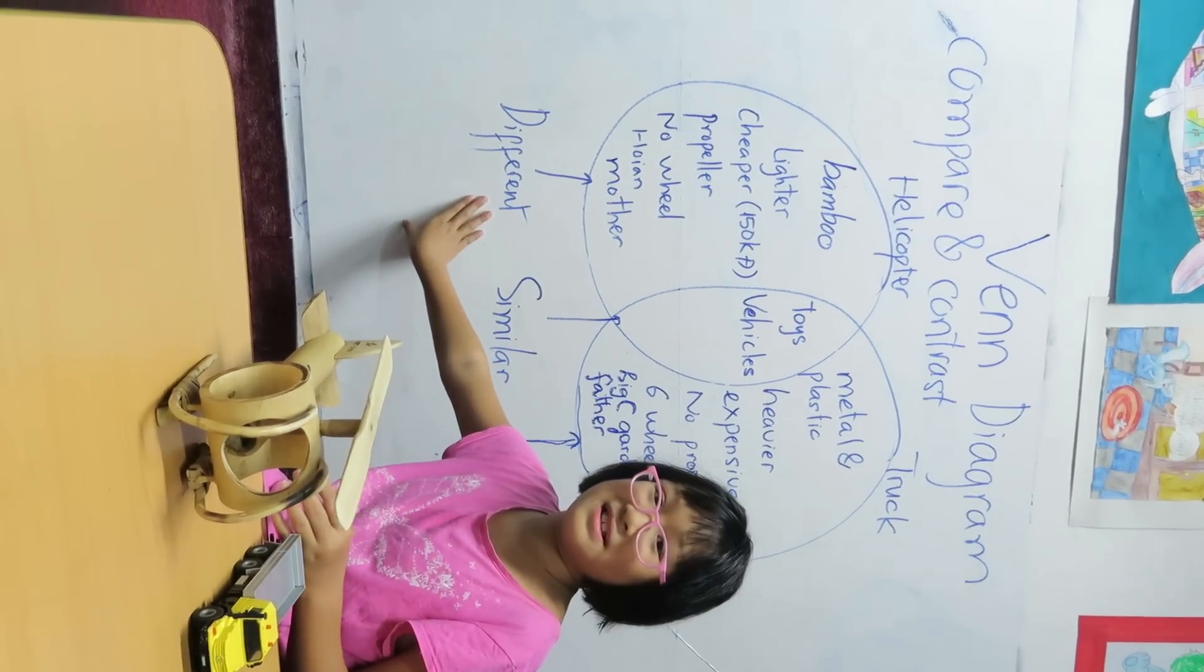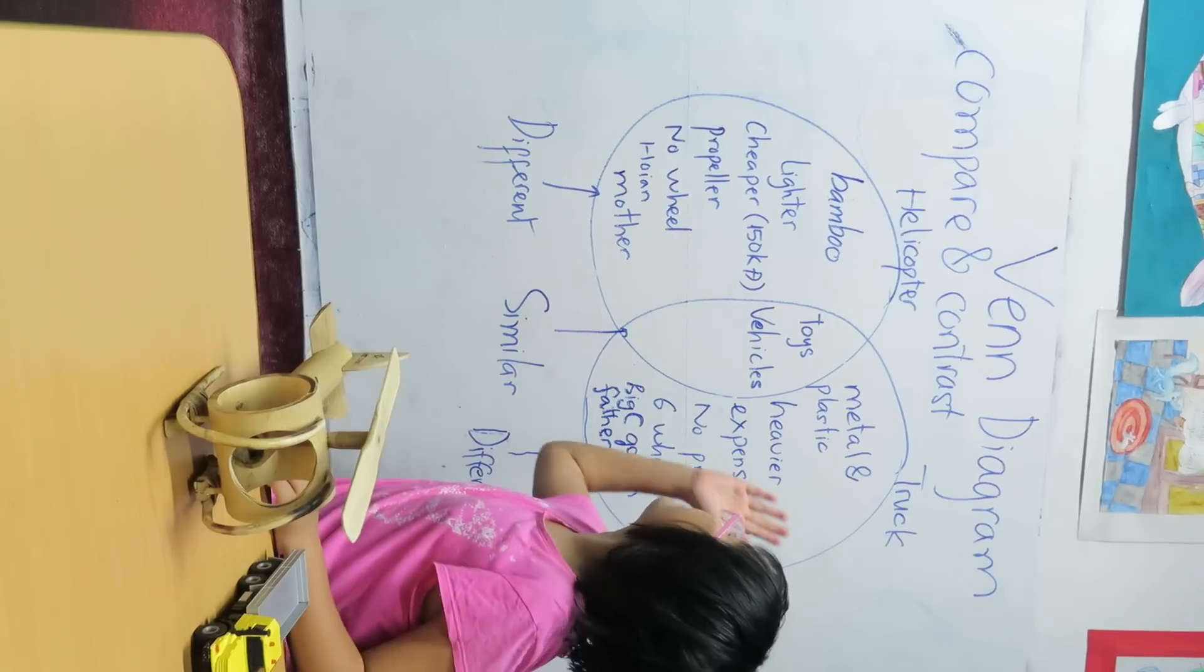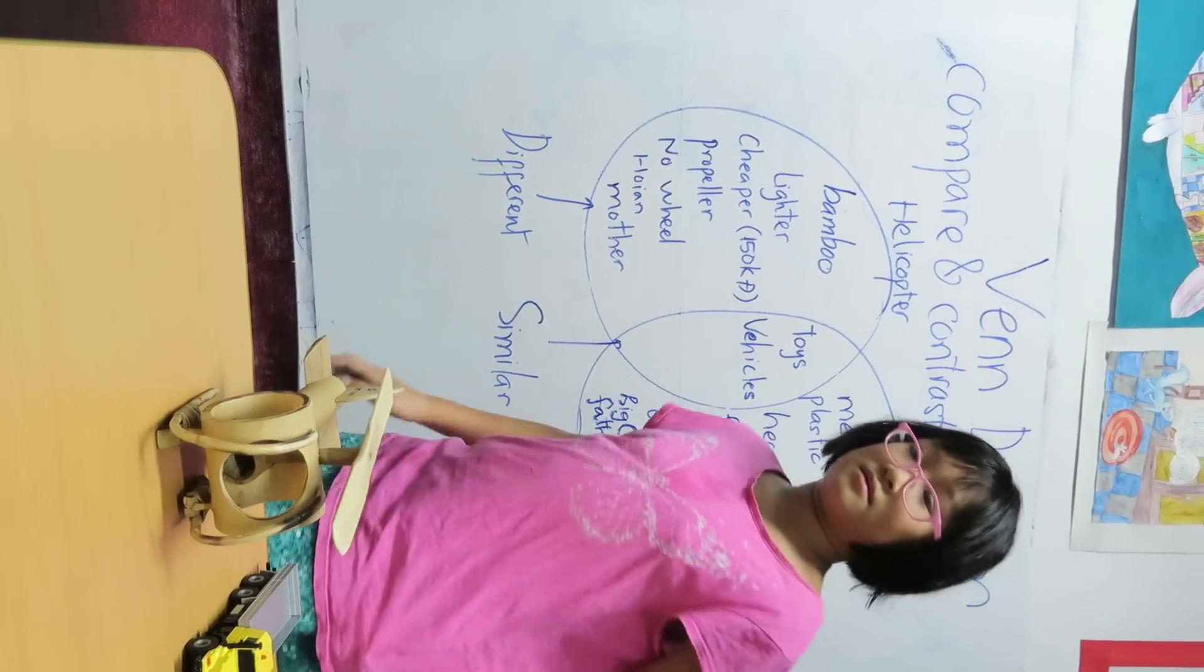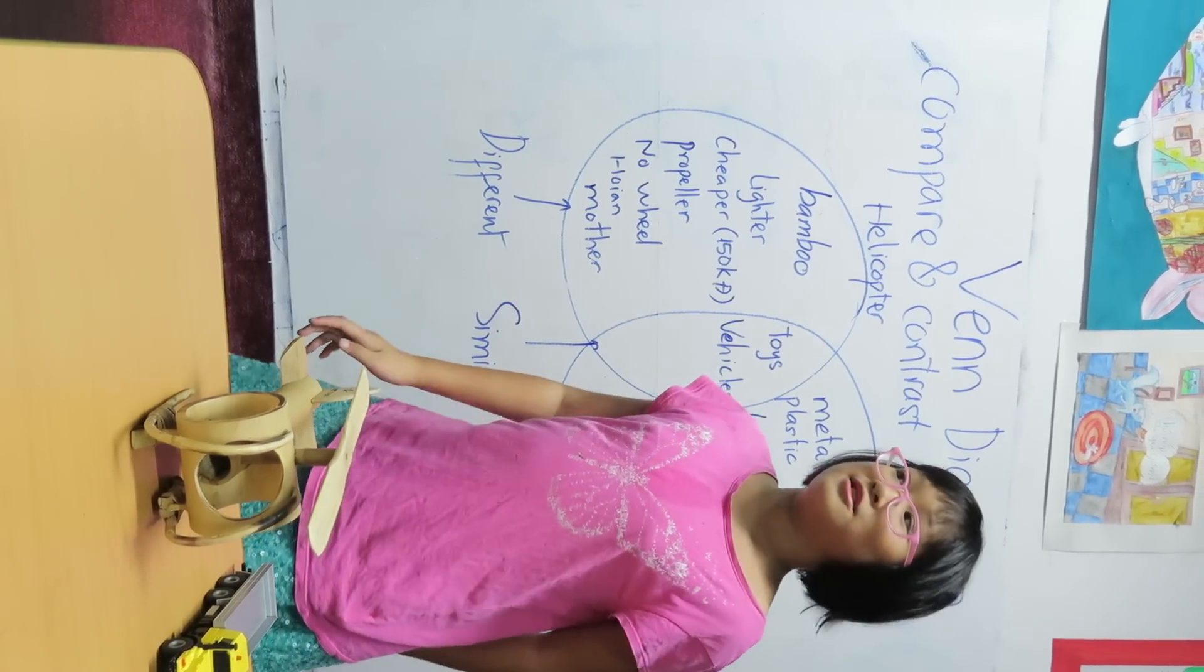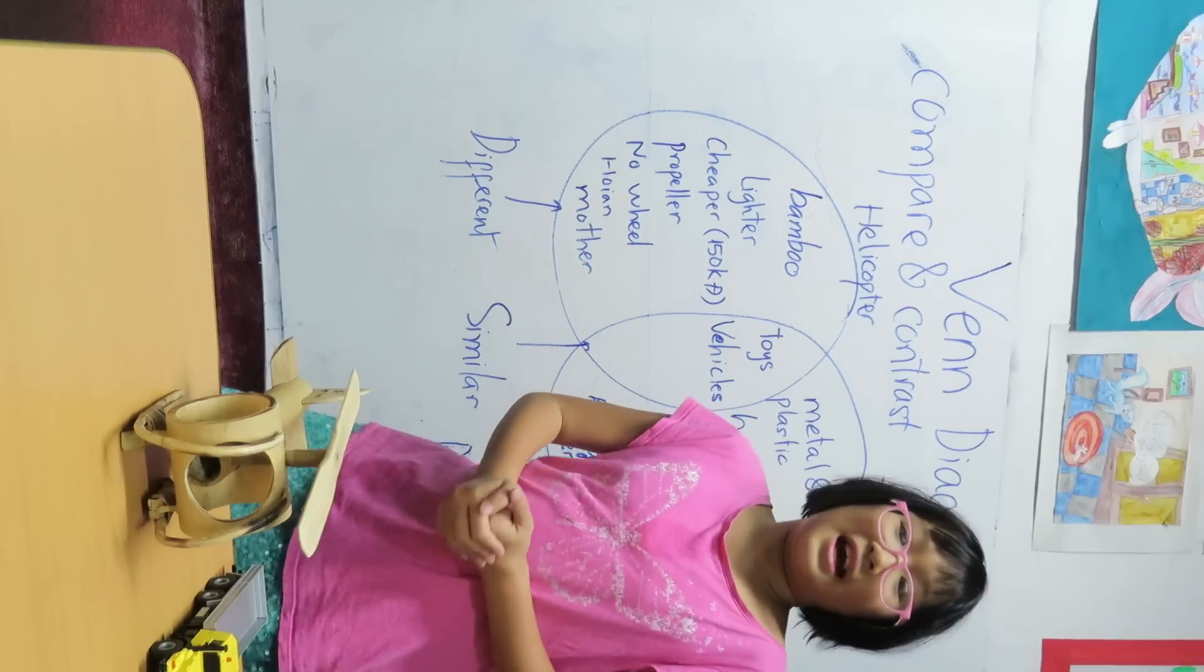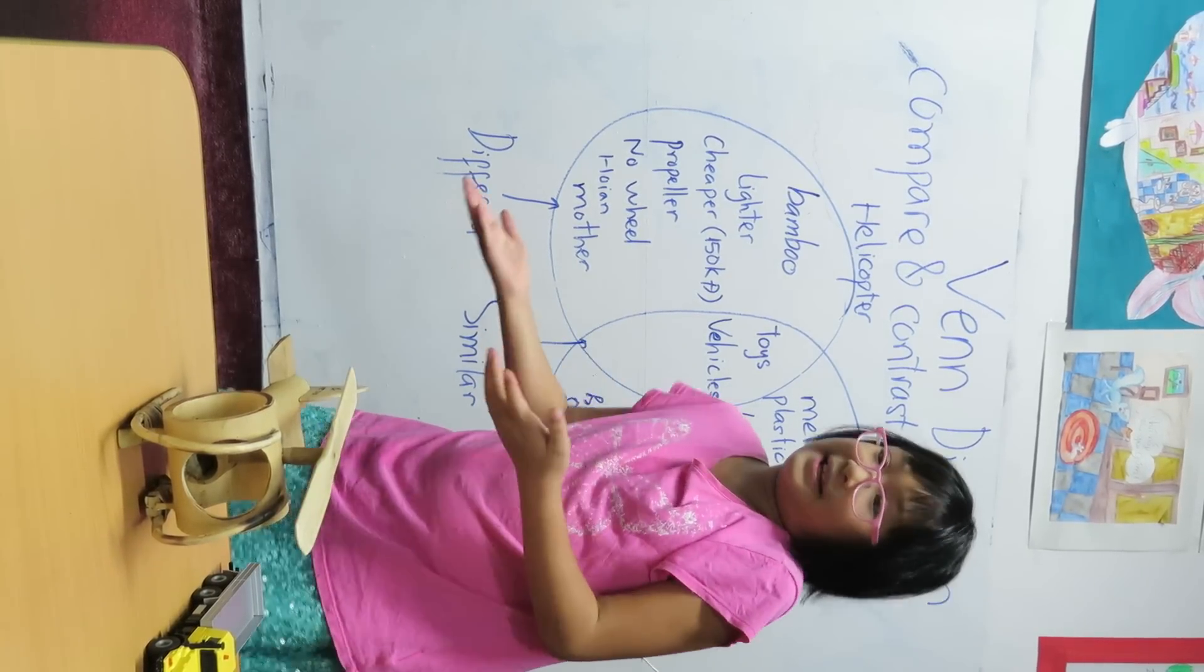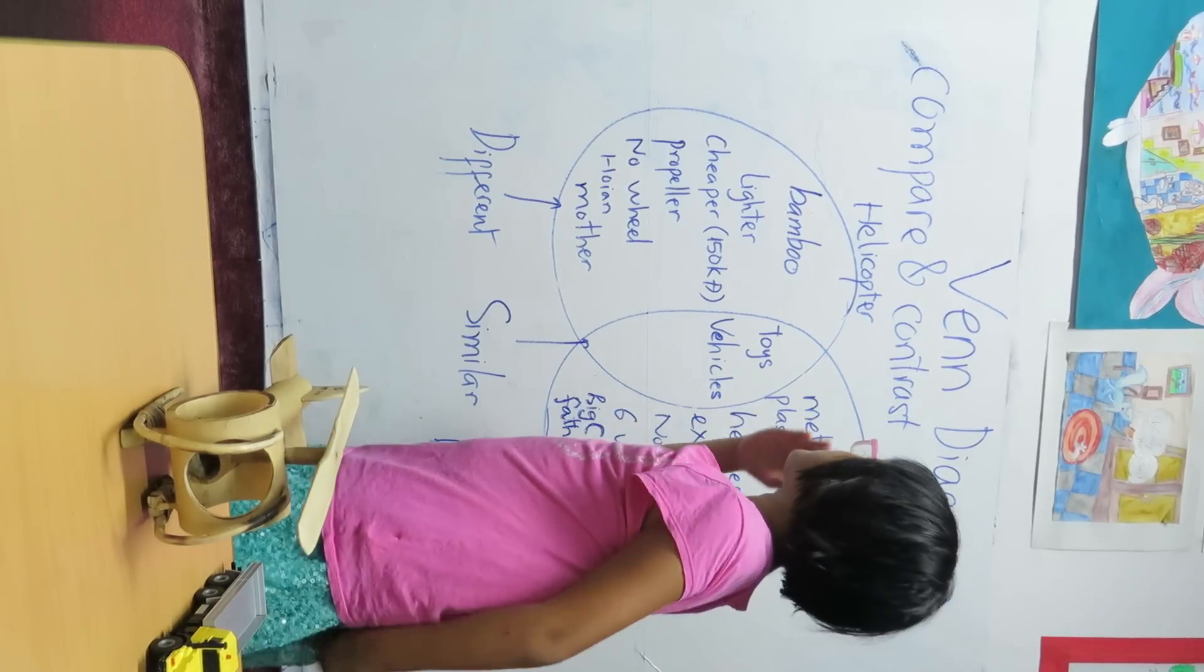So now you know the differences between the helicopter and the truck. So you can use Venn diagrams to compare and contrast almost everything. So let's see.